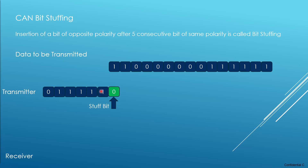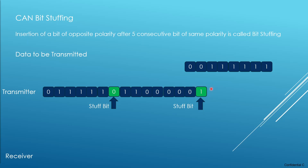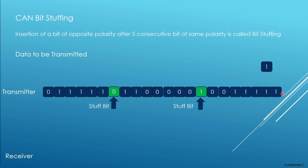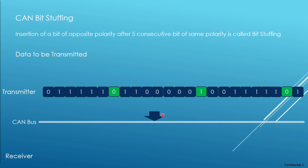After introducing the stuffed bit, it looks at the remaining bits again. Once it encounters a similar situation — for example, five consecutive zeros — it introduces the next stuffed bit with an opposite polarity of one. Again, when it encounters five consecutive ones, it introduces another stuffed bit of opposite polarity. Now the CAN data frame is fully stuffed and ready to be put onto the CAN bus. This stuffed data is sent onto the bus, which is connected to multiple nodes — many listeners who need this CAN frame.